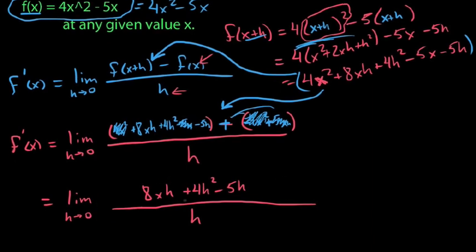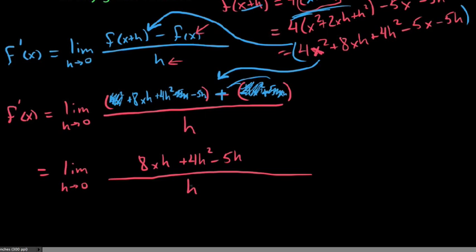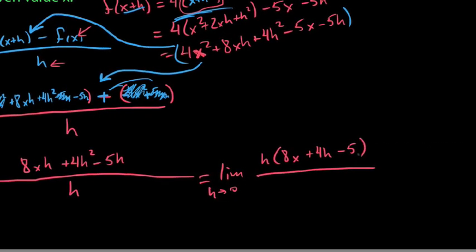So what we're going to do is we're going to do the dividing out technique, where on the top here we can just rewrite this as the limit. Again, the limit as h goes to 0 of, and we'll factor out an h, we say of this, h times 8x plus 4h minus 5, and this is all over h, and now our h is canceled.